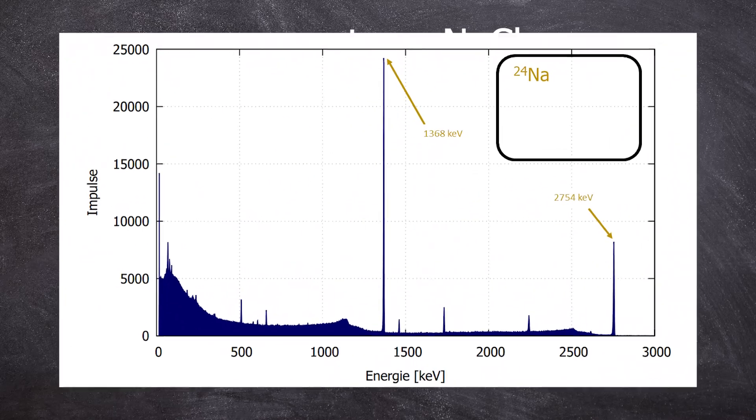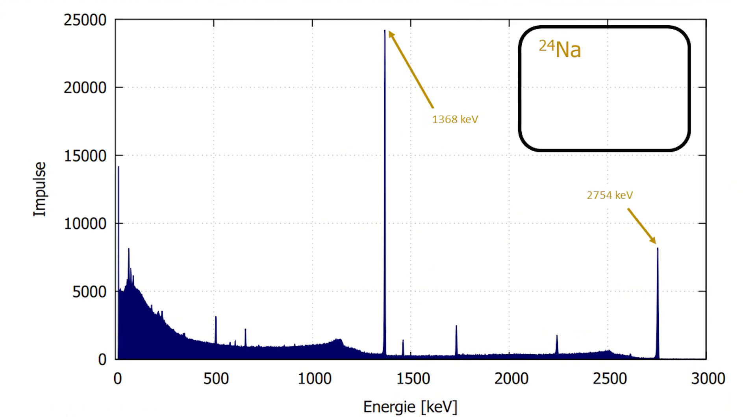The gamma spectrum shows distinct high energy peaks of sodium-24 at 1,368 and 2,754 keV. But where's the chlorine-38?